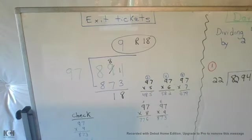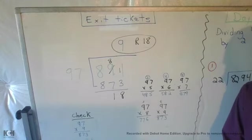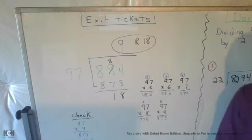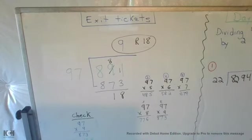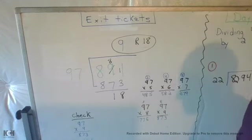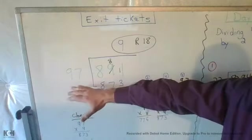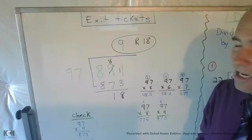Here we are with Day 26's exit ticket. We have 891 divided by the divisor of 97. What you can see here is I did my 97 times tables to see how many times 97 will go into 891.